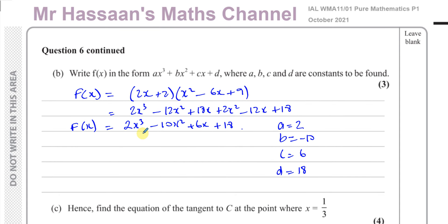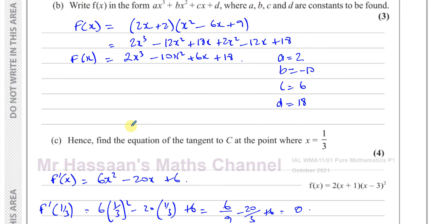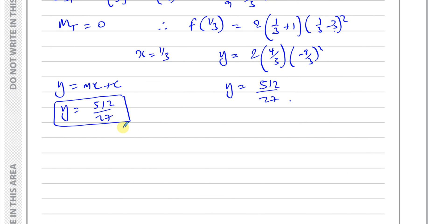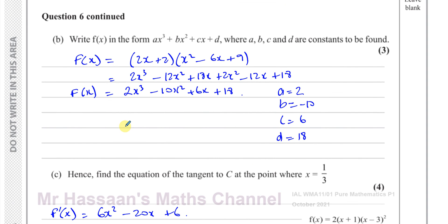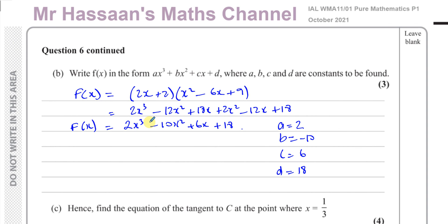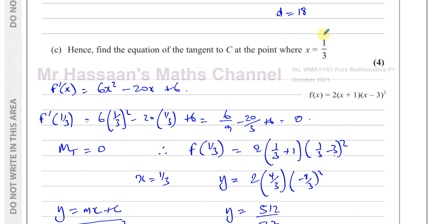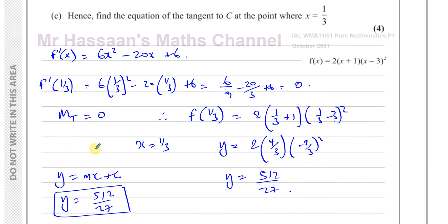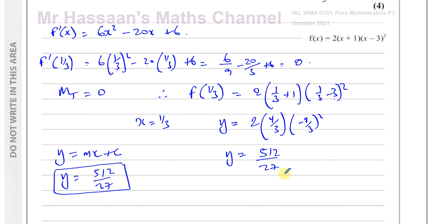So that's the answer to part C of question six — the last part of the question. The gradient was zero, giving a horizontal tangent line. We found the y value when x equals one third, which gives us the equation of the tangent: y equals 512 over 27.